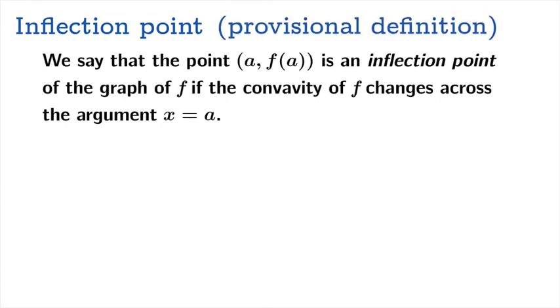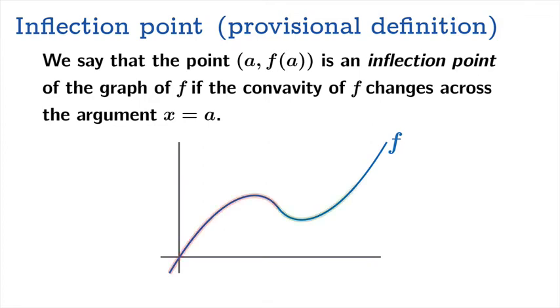So here's a provisional definition of inflection point. You could say that a point (a, f(a)) is an inflection point of the graph of f if the concavity of f changes across the argument x equals a. So your classic picture looks something like this.